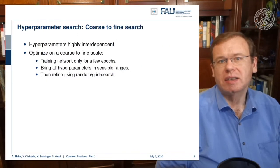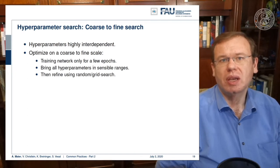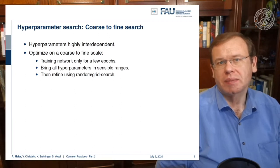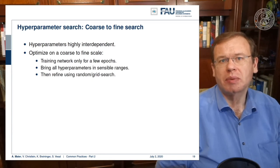Hyperparameters are highly interdependent. You may want to use a coarse-to-fine search—you optimize on a very coarse scale in the beginning and then make it finer. You may also only train the network for a few epochs and then bring all the hyperparameters in a sensible range. Then you can refine using random and grid search.